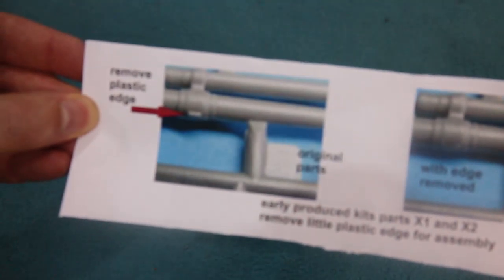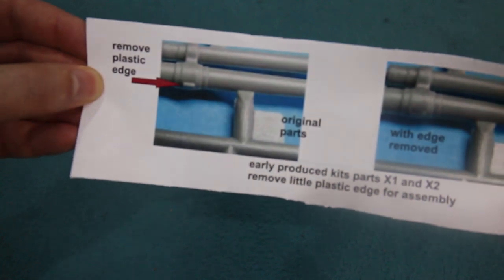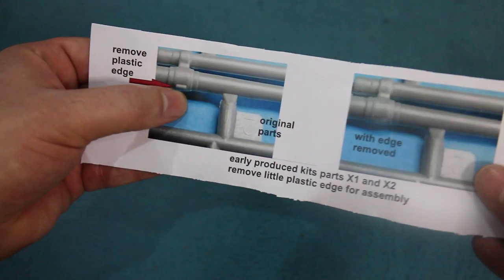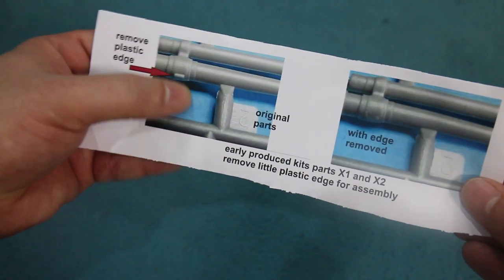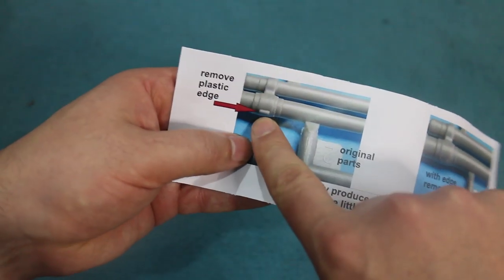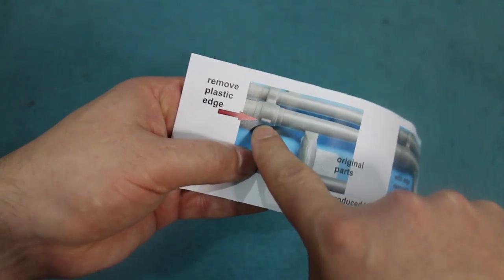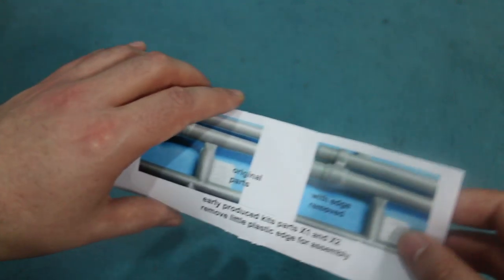Again they look pretty clear. They're a little bit unusual compared to modern instructions. There's an erratum slip as well that I got on this one that says there is a small plastic edge, a little lump here that is present on early produced kits and should be removed. That's certainly on this one. This is a very new kit at the time I'm making this.